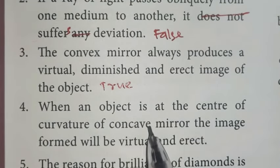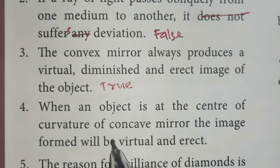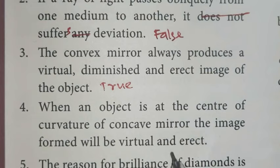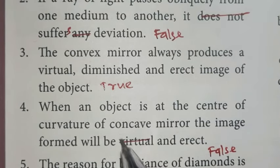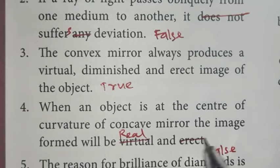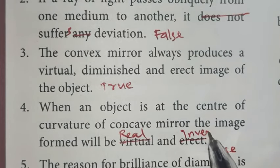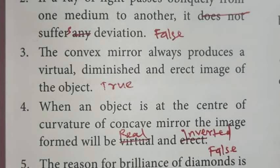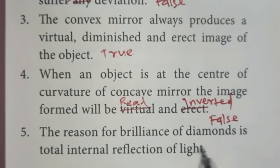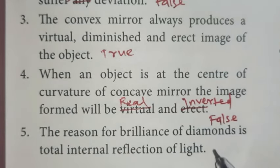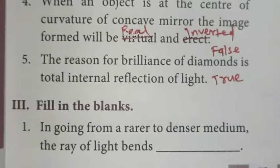Fourth one, when an object is at the center of curvature of concave mirror, the image formed will be virtual and erect. False. This is real and inverted. Fifth one, the reason for brilliance of diamond is total internal reflection of light. Yes, this is true.